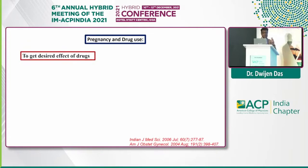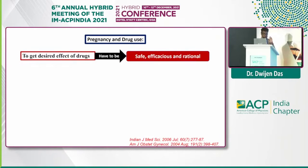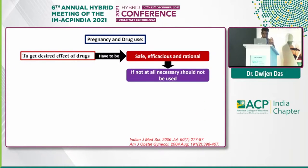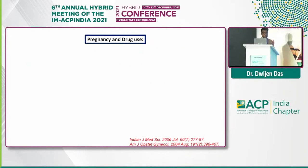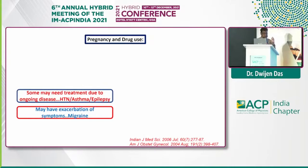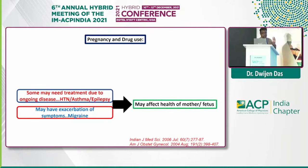When thinking about pregnancy and drugs, we need a good drug that should be safe, efficacious, and rational. Otherwise, it is better to avoid drugs as much as possible during pregnancy, as they may cause harm to the fetus. Some conditions always remain in pregnancy because of chronic diseases like hypertension, asthma, or epilepsy, which may continue with the pregnancy, so you'll have to use the drug. And sometimes some diseases may exacerbate — for example, migraine, which may exacerbate during pregnancy — so these are situations where you will have to use the drug, but this may affect the mother as well as the fetus.